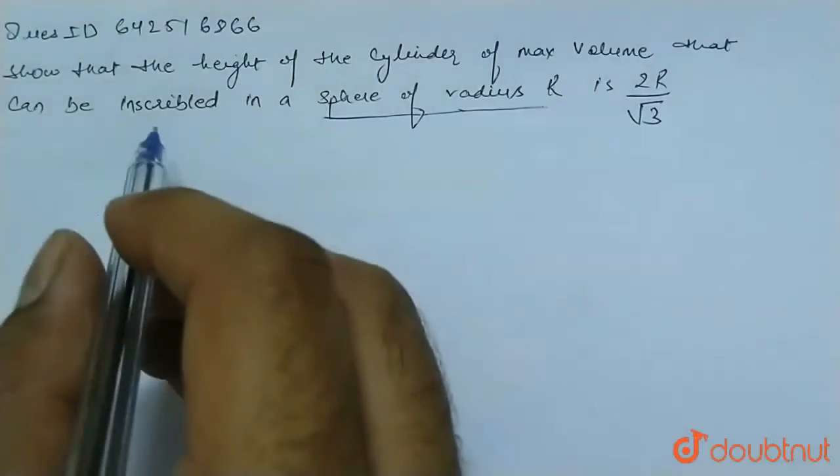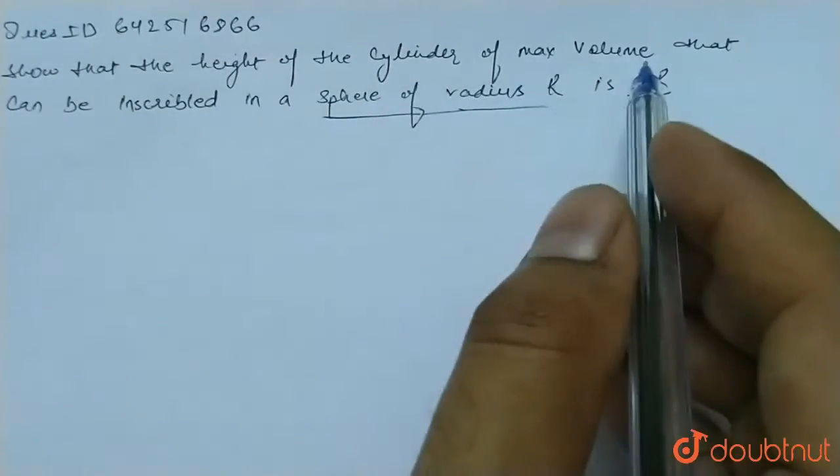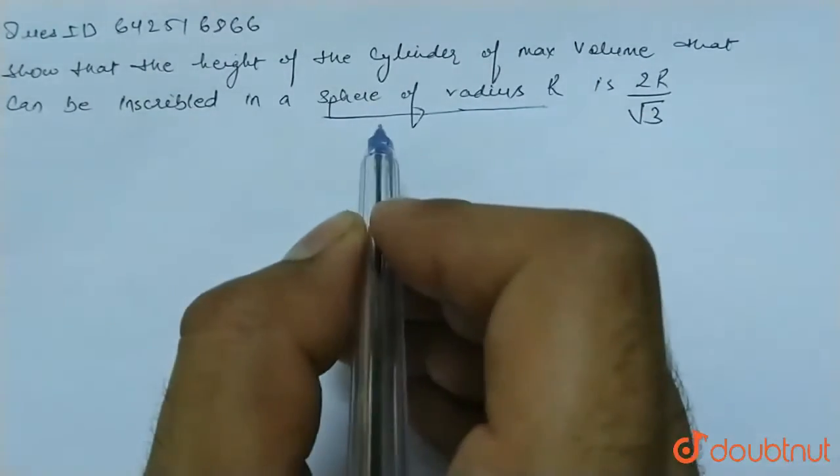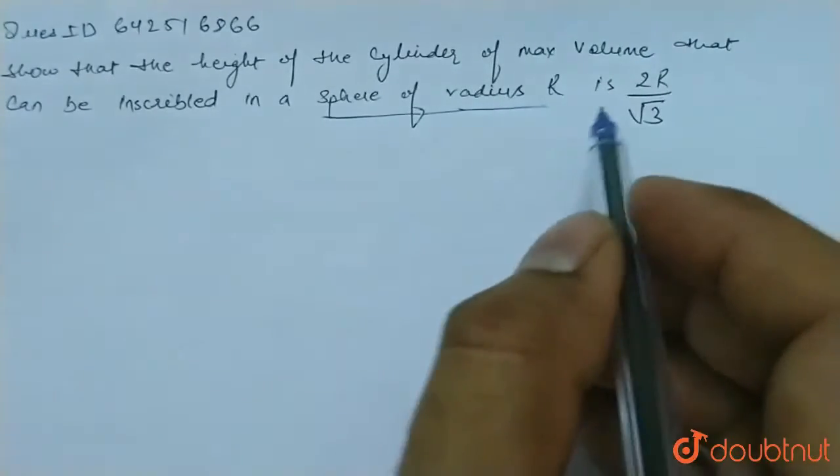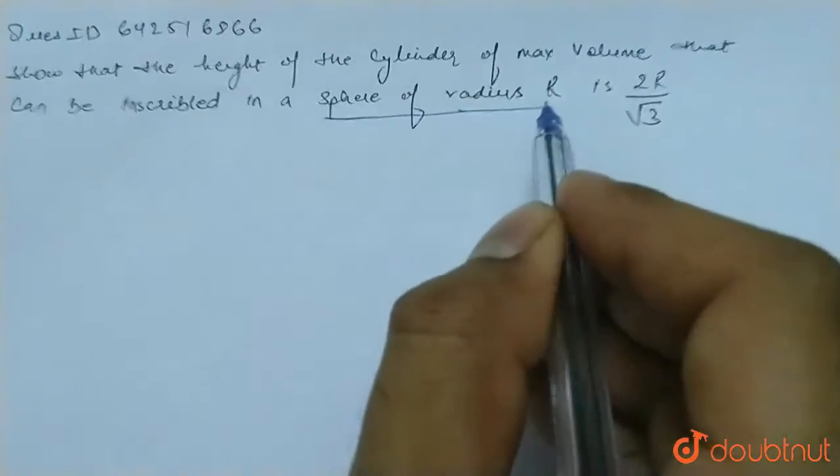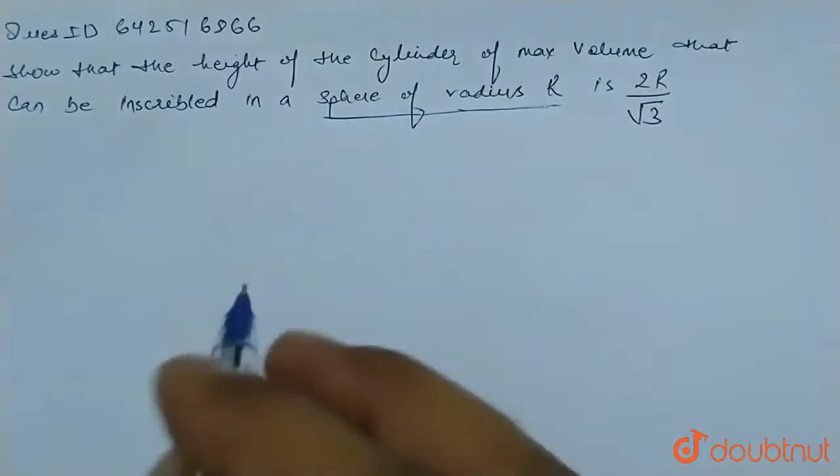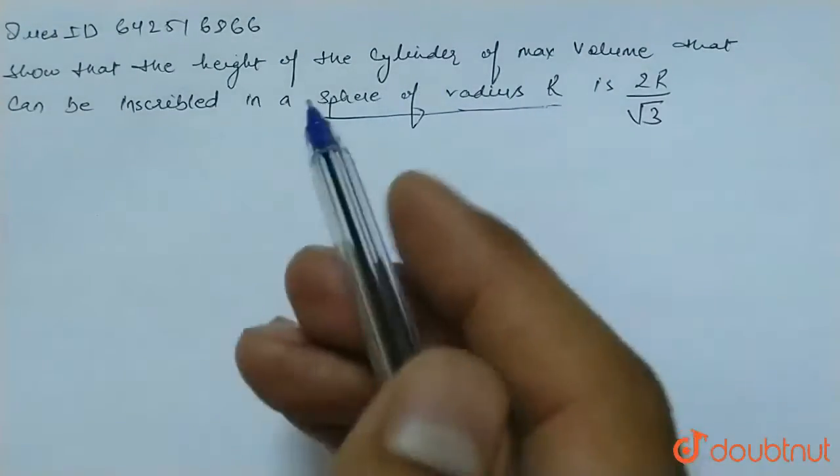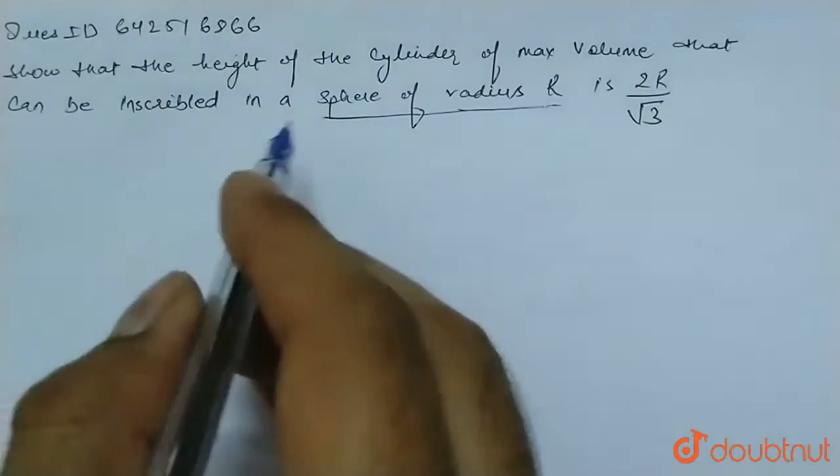The question is given: Show that the height of the cylinder of maximum volume that can be inscribed in a sphere of radius R is 2R by root 3. So here, the sphere of radius is R, that is constant. And we have to find the height of the cylinder of maximum volume that can be inscribed in a sphere.